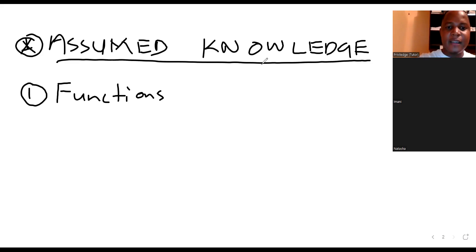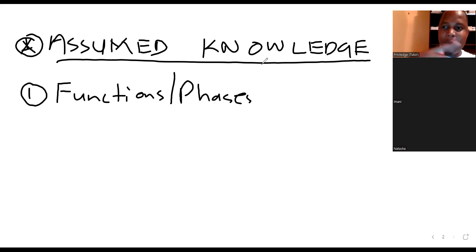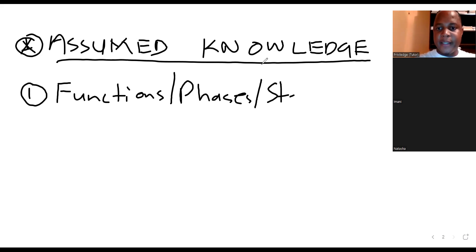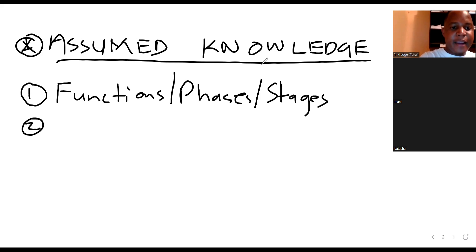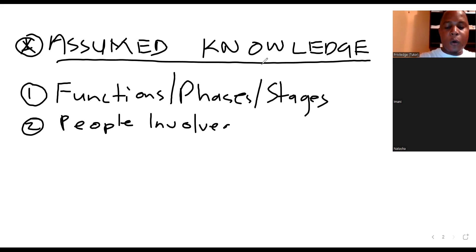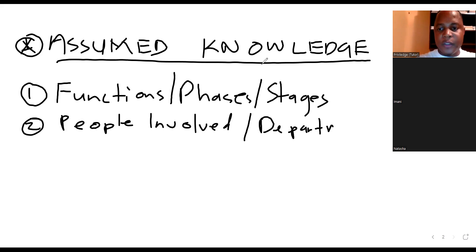A cycle goes through stages, phases, or functions, so you need to know those within that particular cycle. Number two: you need to be able to identify the people involved, or the respective departments in place at each of those respective stages. We're going to do that practically with the Revenue and Receipt Cycle.